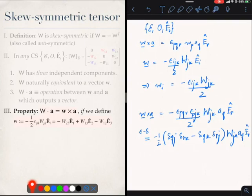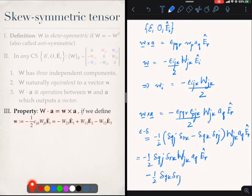Now what I will do is that I will open this bracket up and evaluate these terms separately. So let me do that: minus half δ_qj δ_rk W_jk a_q e_r plus half δ_qk δ_rj capital W_jk a_q e_r. So I have got lots of deltas over here. So what I am going to do therefore is that I am going to start contracting.